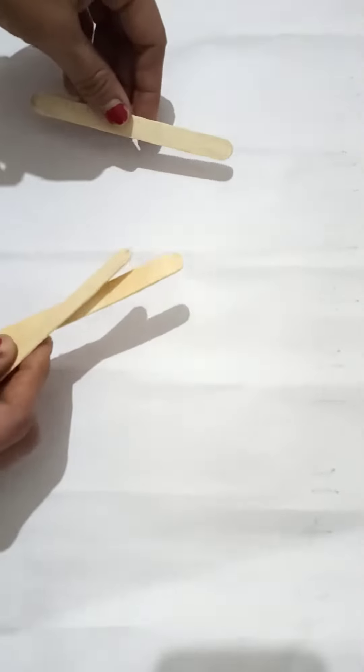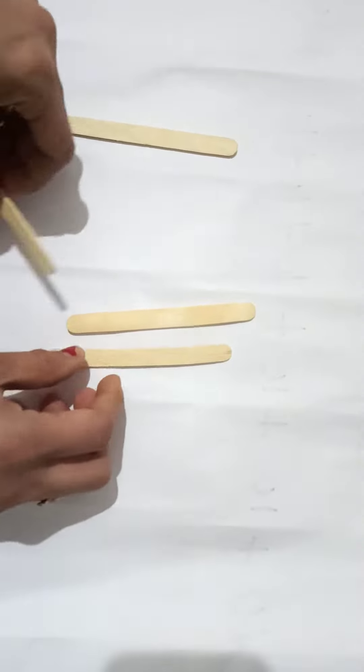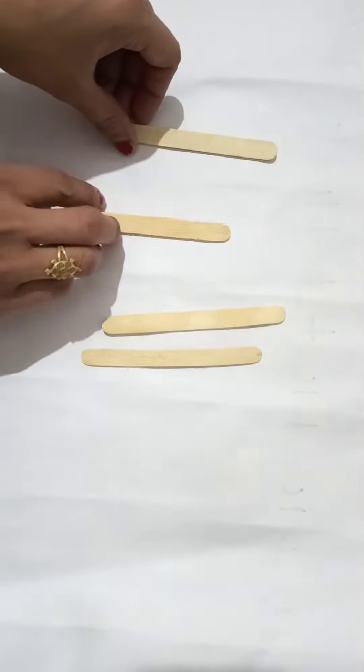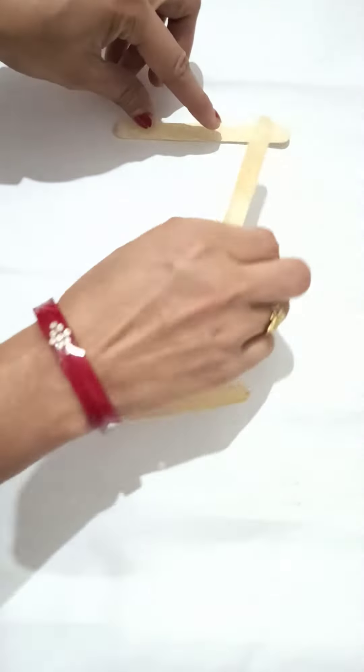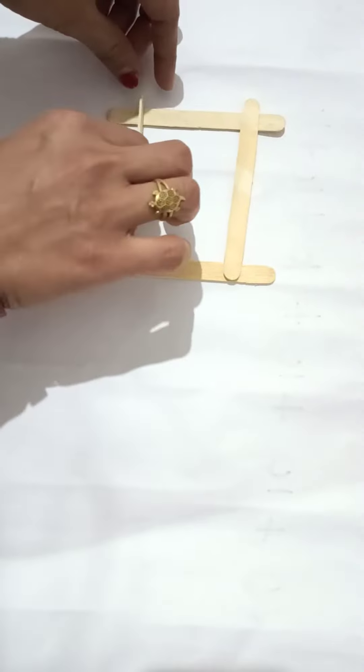You can do this activity with ice cream sticks also. Take four ice cream sticks and arrange them like this, and paste with glue.